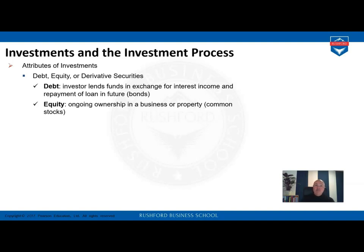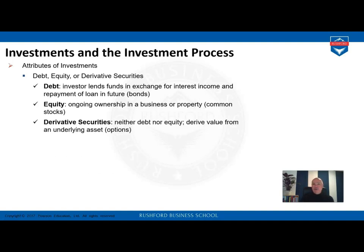Equity investment is an ownership investment — we get full or partial ownership of a company. The return expectation for equity can be dividends or capital gains. The dividend is a continuous payment from the company; the capital gain reflects how the stock behaves on the market. Derivatives are not debt or equity but are derived from these two asset types — for example, stock options or options on interest. It is not a direct investment but a derived investment from an underlying asset.